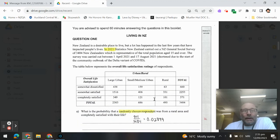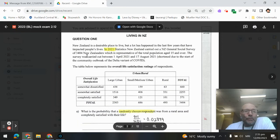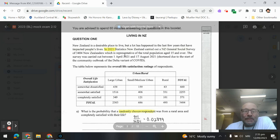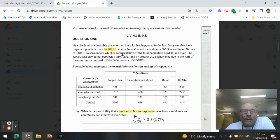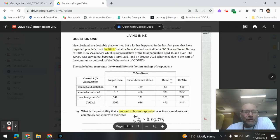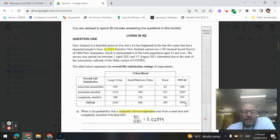Okay, for question one, we have a table here. We're saying New Zealand is a desirable place to live. In 2021, Stats New Zealand carried out a general survey of 3,484 New Zealanders, which is representative of the total population age 15 and over.